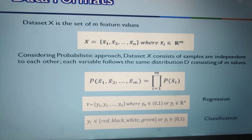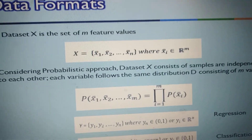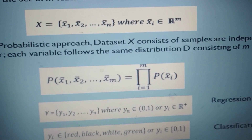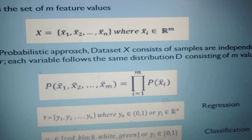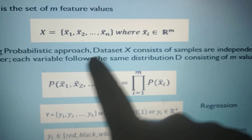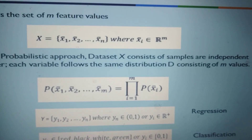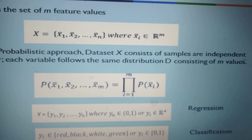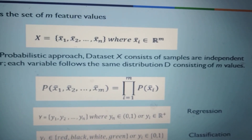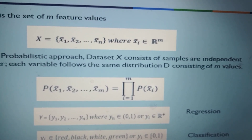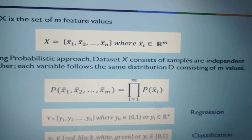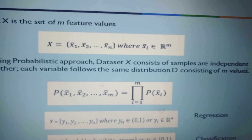The dataset X having m feature values is represented as capital X equals x1, x2, ... xn, where each xi belongs to R to the power m. X is the whole dataset and these are the patterns. The dataset has n number of patterns, meaning n number of rows. Each pattern xi consists of m feature values, so each row has m features. M is the number of features or attributes. In short, the dataset has n rows and m features, so n by m is the size or dimensions of the dataset.